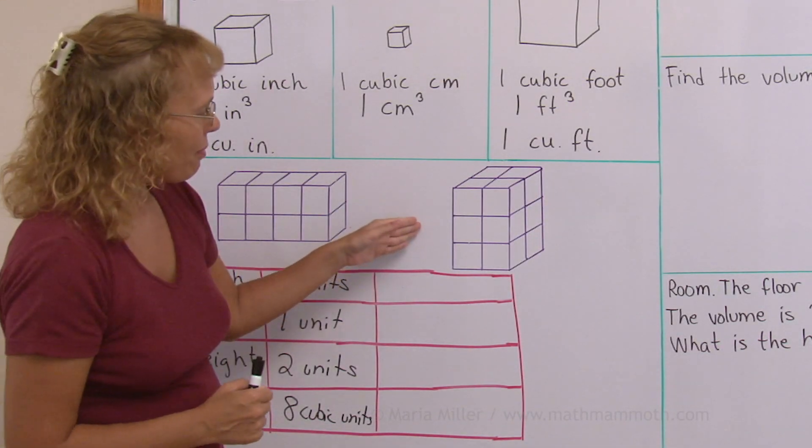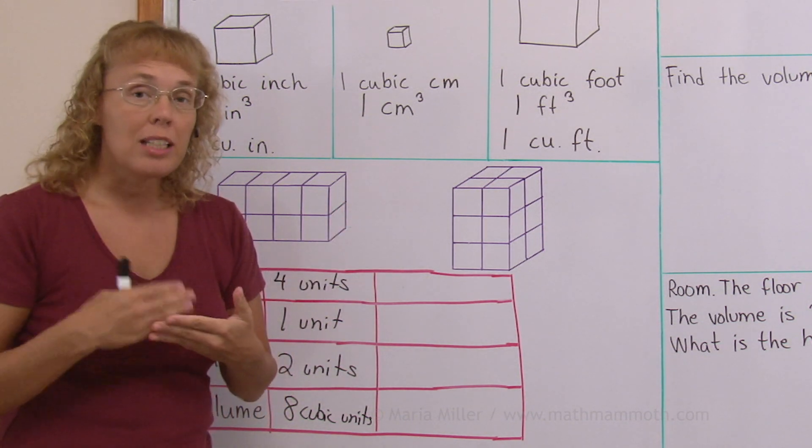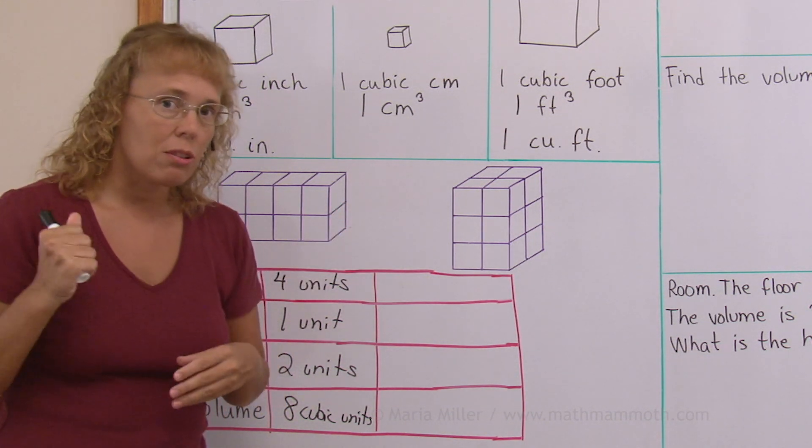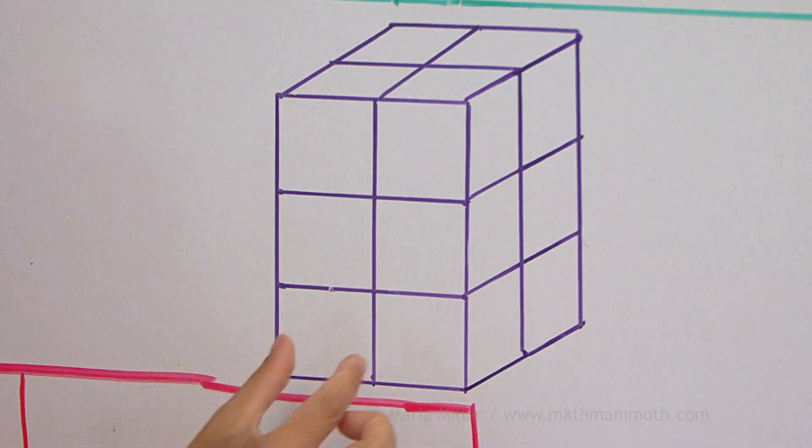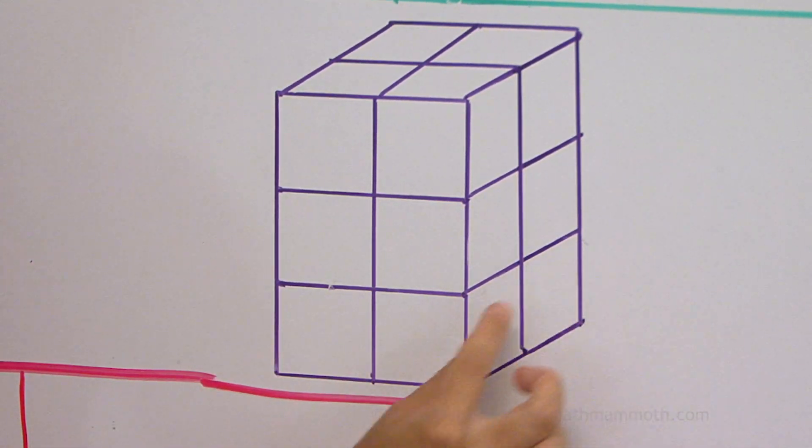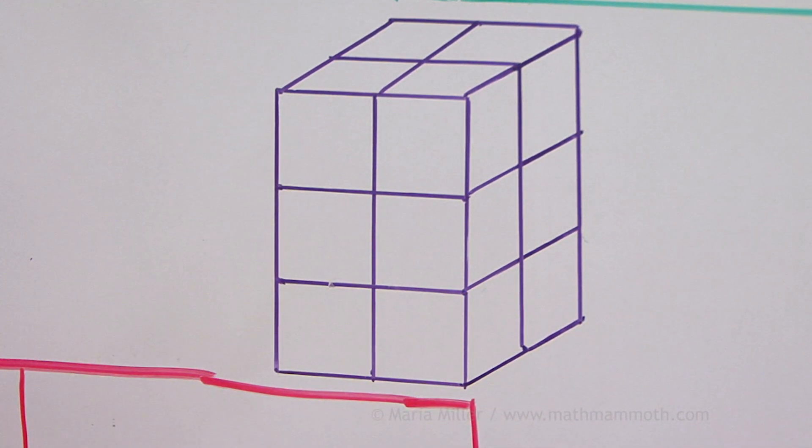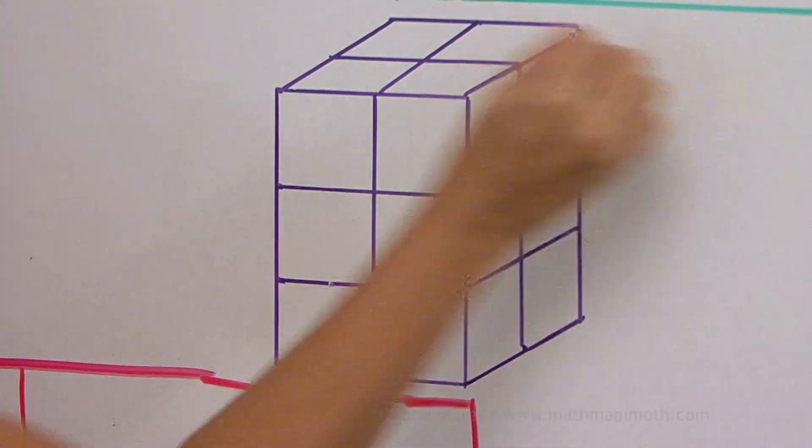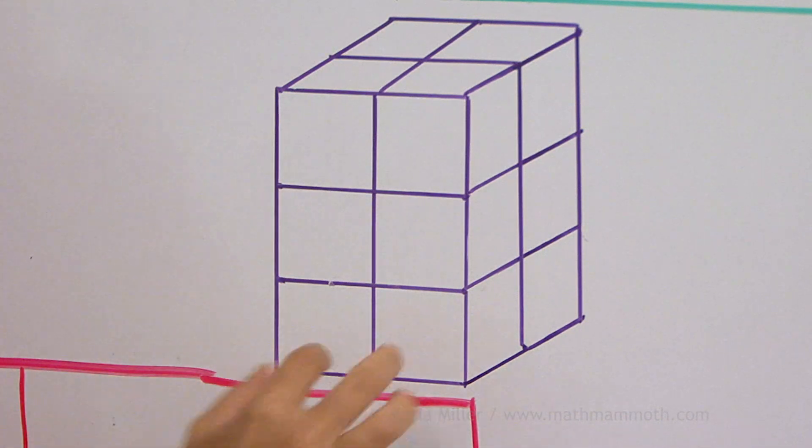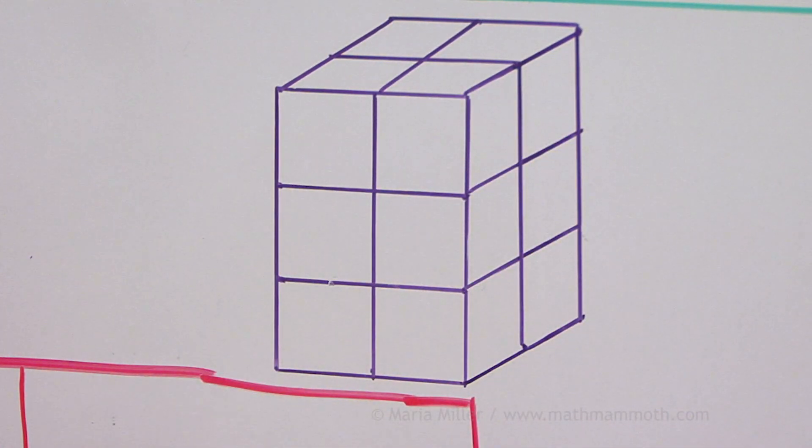Then this one. Again, we can multiply those three dimensions to get the total volume. For example, if I want to know how many blocks are here in the bottom row, I would have two times two, four in the bottom row. And then I would go that times the height, how many layers there are. I would go four times three equals 12.